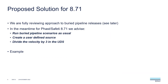So what's the proposed solution for the current version of FAST and SFETI? We're currently reviewing our approach to these buried pipeline releases. In the meantime, for FAST and SFETI 8.71, we advise that you run the buried pipeline scenarios as usual, then create a user-defined source from that buried pipeline scenario, and then divide the velocity by three within the UDS.